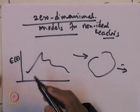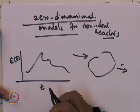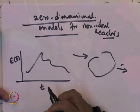We looked at two different extremes. One extreme is the complete segregation model and another extreme is the maximum mixedness model. Let me quickly revise these so that it forms a nice platform for further discussion as far as this chapter is concerned.